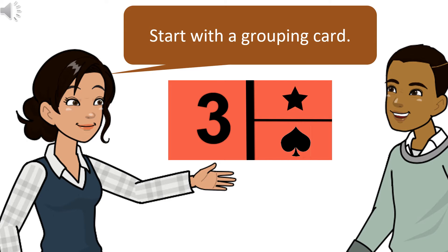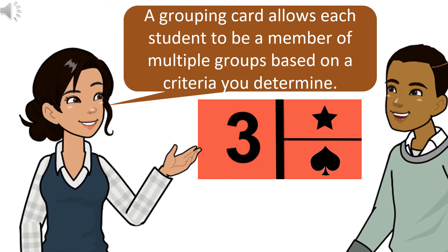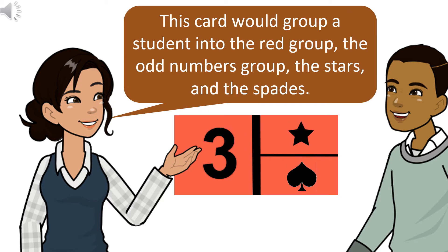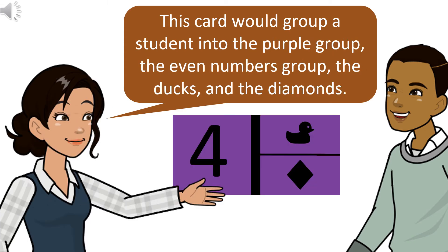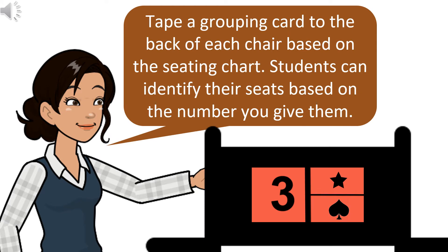Start with a grouping card. A grouping card allows each student to be a member of multiple groups based on the criteria you determine. This card would group a student into the red group, the odd numbers group, the stars, and the spades. This card would group a student into the purple group, the even numbers group, the ducks, and the diamonds.